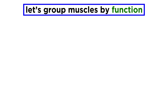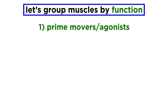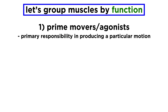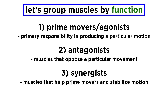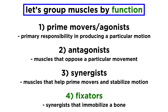The four functions we will examine are as follows. First there are prime movers, or agonists — muscles that have a primary responsibility in producing a particular motion. Muscles that oppose a particular movement are called antagonists; this can help provide resistance and produce more delicate motions. Next there are synergists, which help the prime movers either by contributing additional force or reducing undesirable movements that could occur as the prime mover contracts. We can think of synergists as stabilizers in a certain sense. When synergists immobilize a bone, they are called fixators.